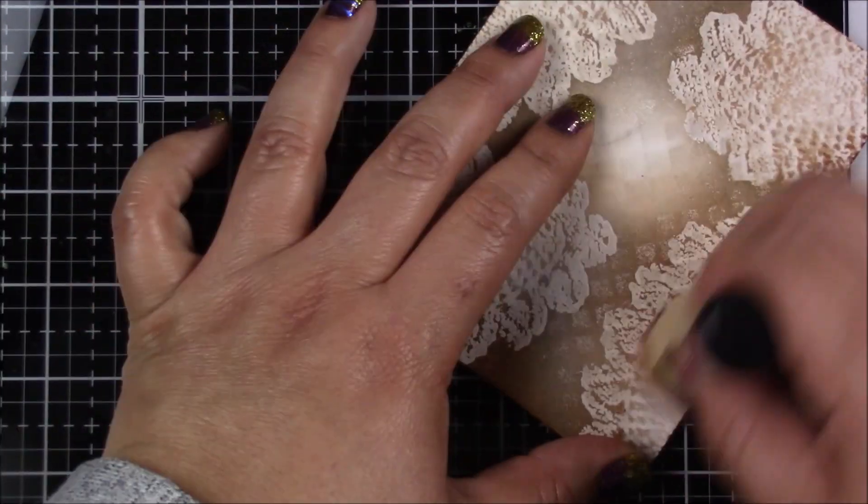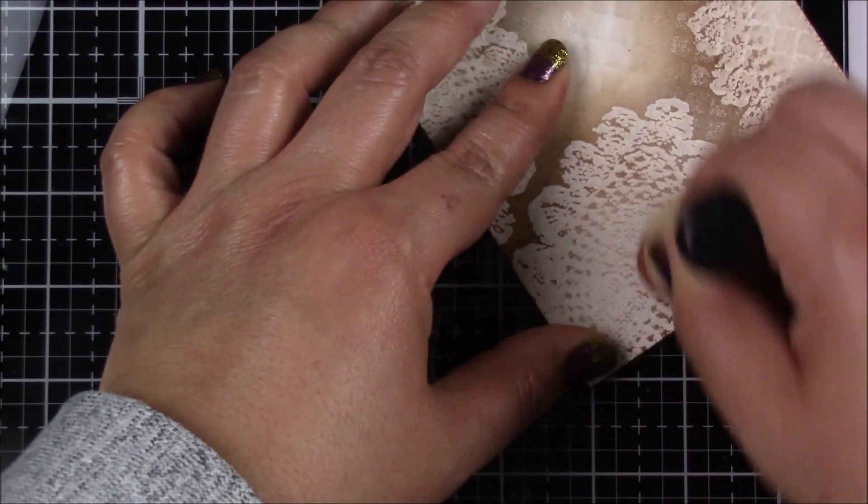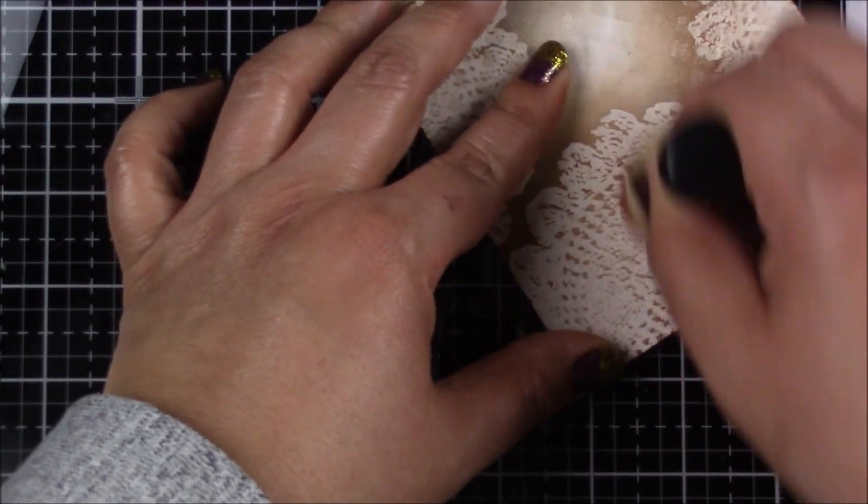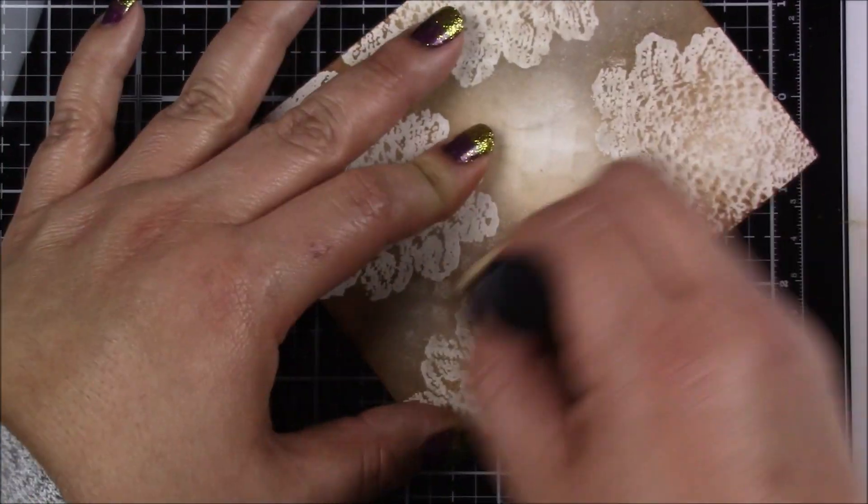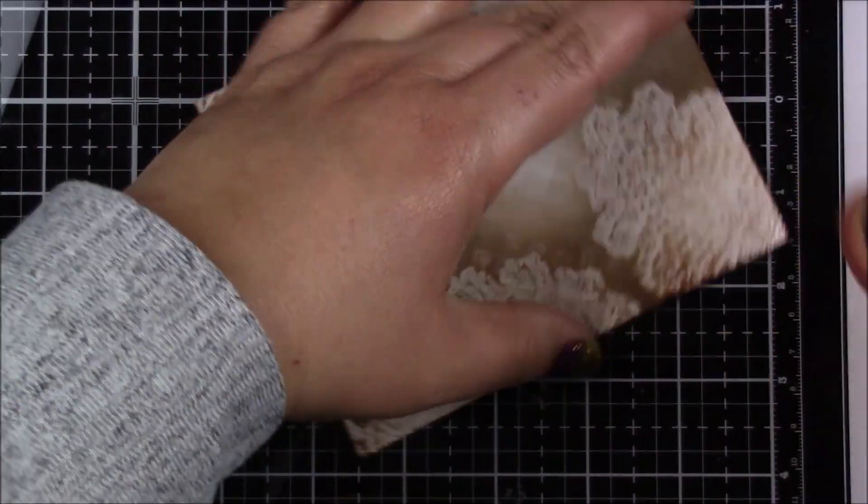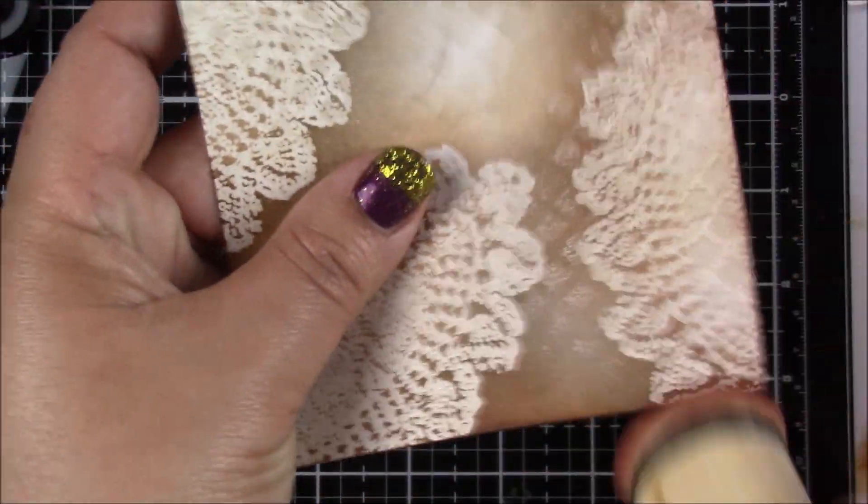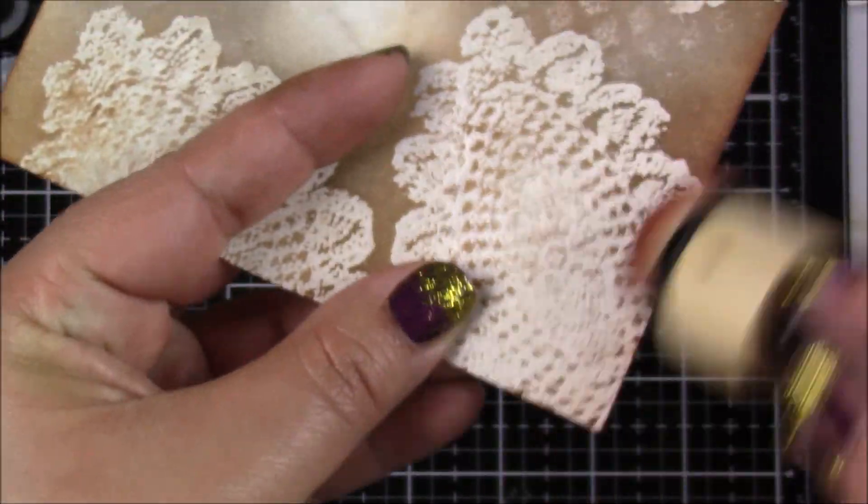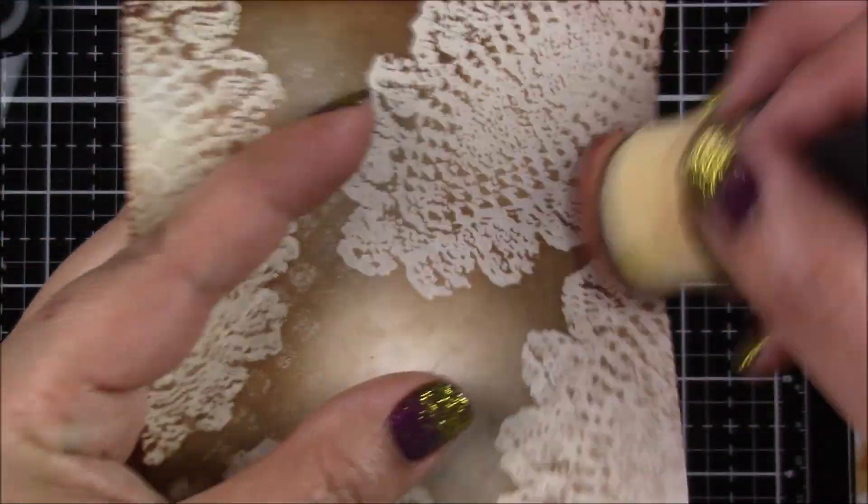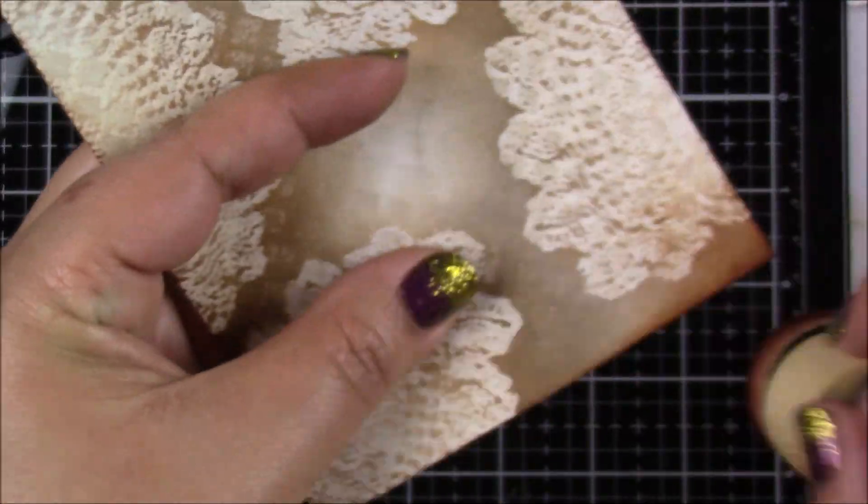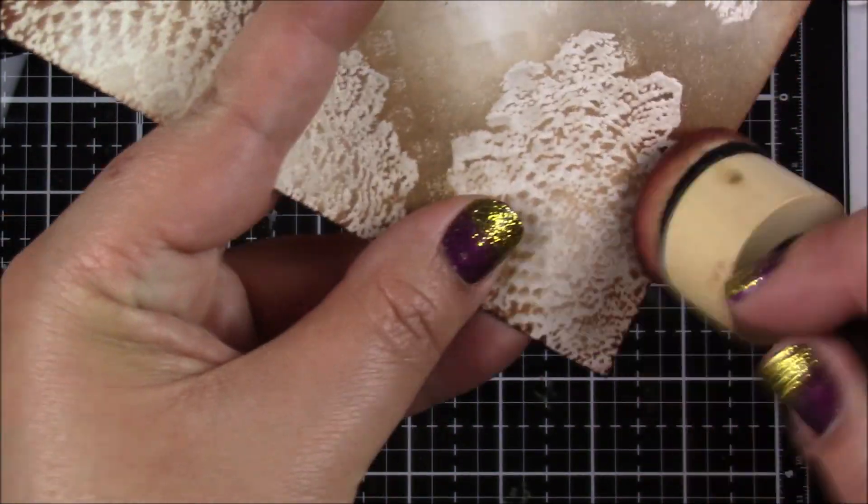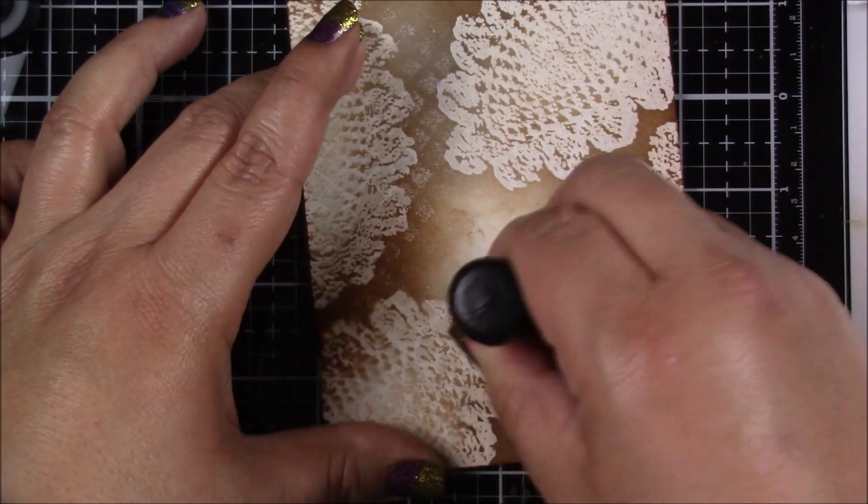One thing that you want to do after you're done with the blending of the ink is get either a dry baby wipe or a rag and kind of just go over the embossed sections, just to clean any excess ink on top of that. That will help your image pop even further.